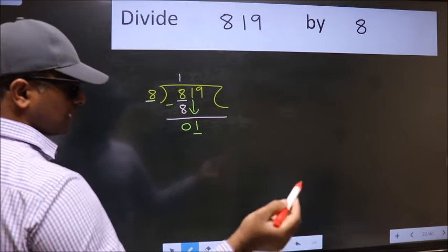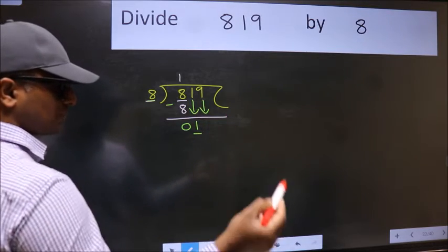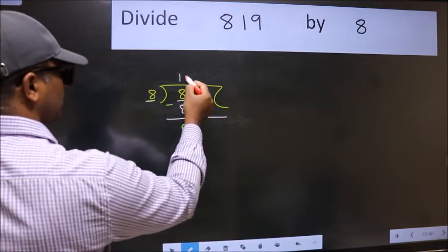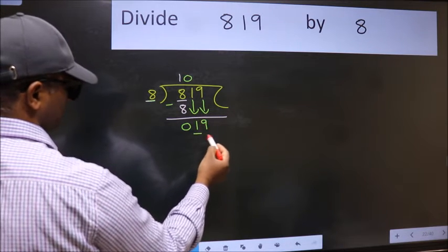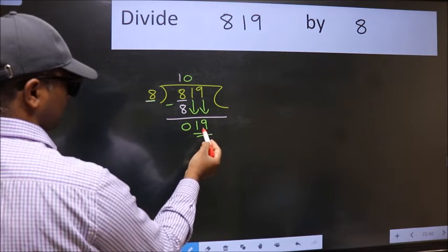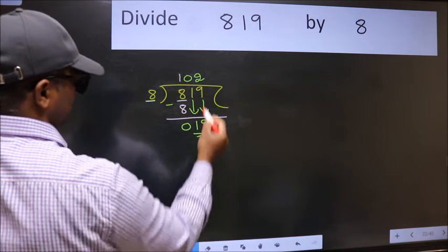So we should bring down the second number. And the rule to bring down second number is put 0 here. Then only we can bring this number down. So 19. A number close to 19 in 8 table is 8 to 16.